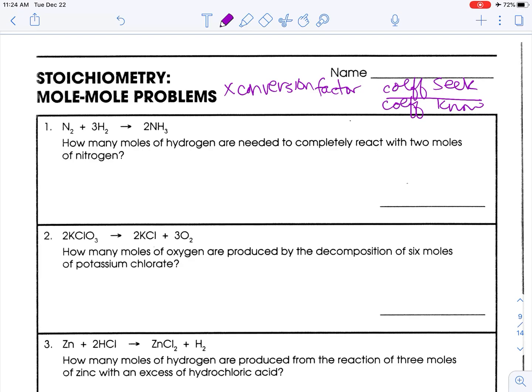For number one, I have a balanced chemical reaction, and the way I know that is I see I have two nitrogens, two nitrogens, six hydrogens, six hydrogens. How many moles of hydrogen are needed to completely react with two moles of nitrogen? Two moles of nitrogen is what I know.